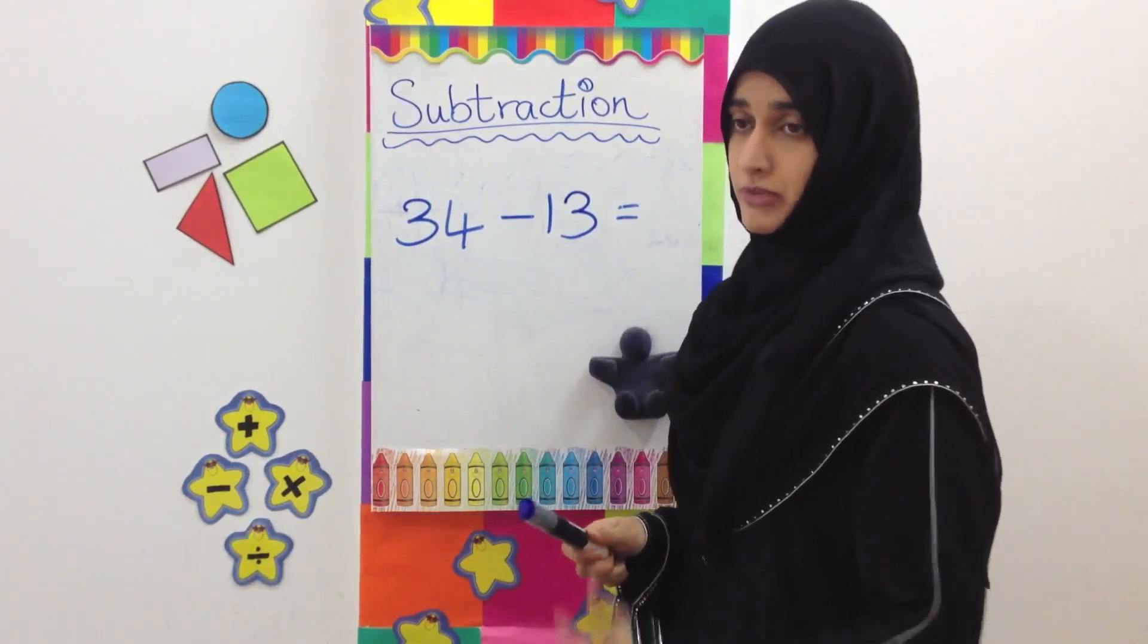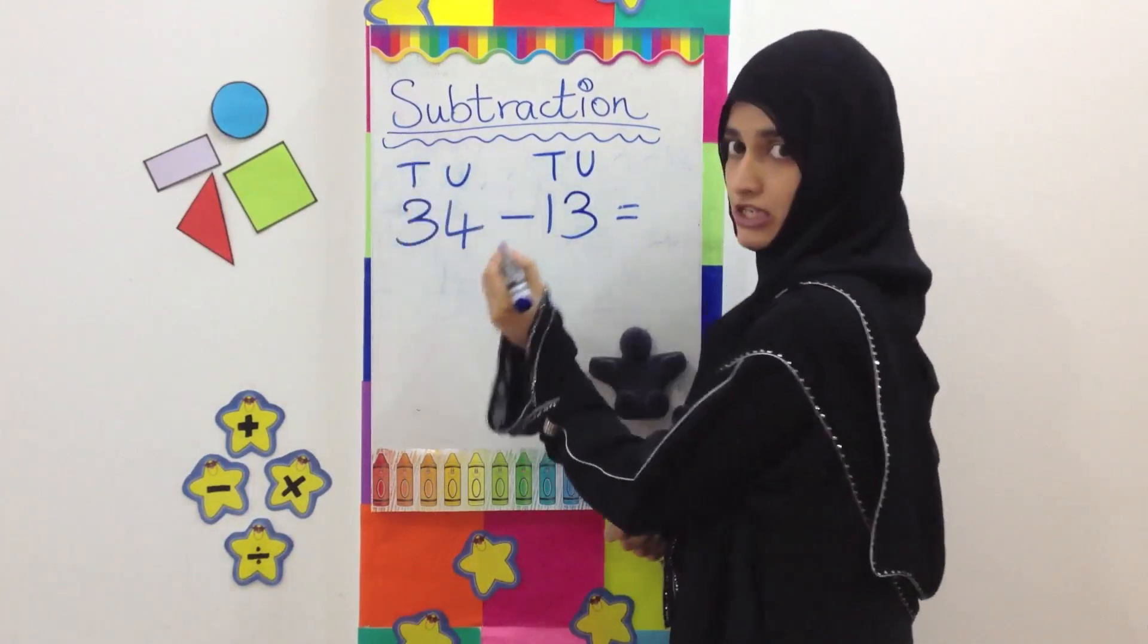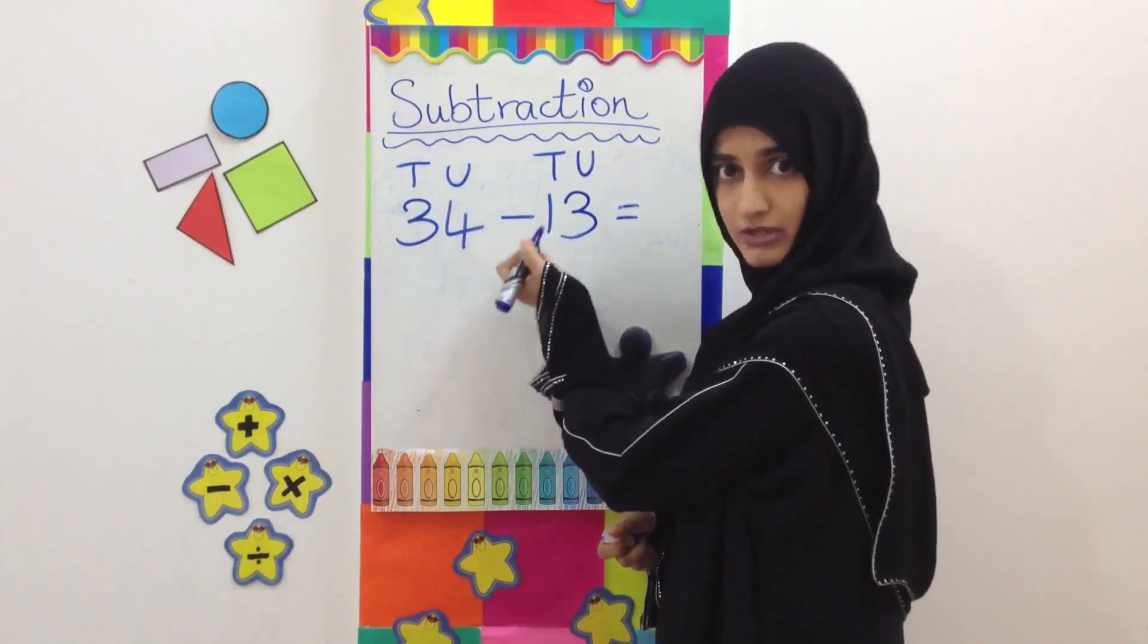First of all, we need to remember that we write units and tens on the top, so we know that we have to take away the units from the units and the tens from the tens.